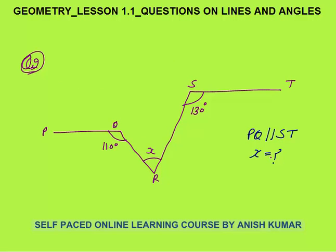Here is the second method for question 2 to make the concept more clear. You can extend ST also — this extended point is T dash. Now TT' will be parallel to PQ. You can also extend the other line; the extended point is Q dash.